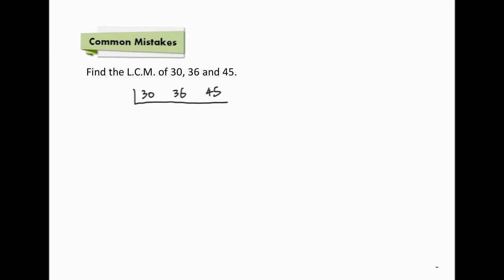Let's find the LCM of 30, 36 and 45. First, we have to divide these 3 numbers by their common factor 3. We then have 10, 12 and 15. We can no longer find a common factor for these 3 numbers. It is a common mistake that we stop the division here. Instead, we have to further divide by the common factor of 2 of the numbers.